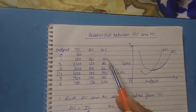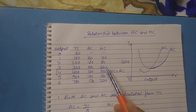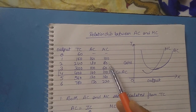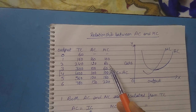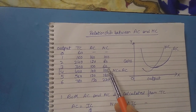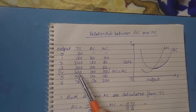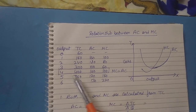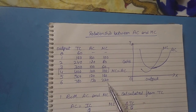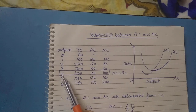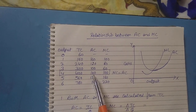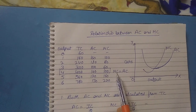Marginal cost is also declining from the very beginning. When we are producing the first unit, the marginal cost is 100. If we are producing one more additional unit, the marginal cost comes down to 80, and then 60. After the third unit, from the fourth unit onwards, marginal cost also starts rising. At the point when the producer is producing the fourth unit, average cost and marginal cost become equal.